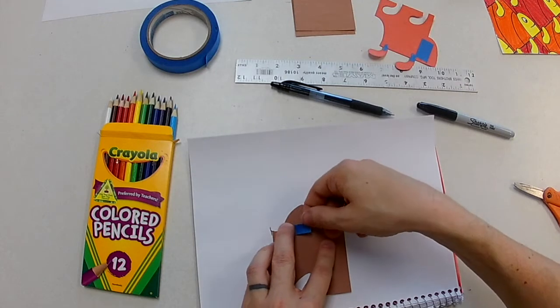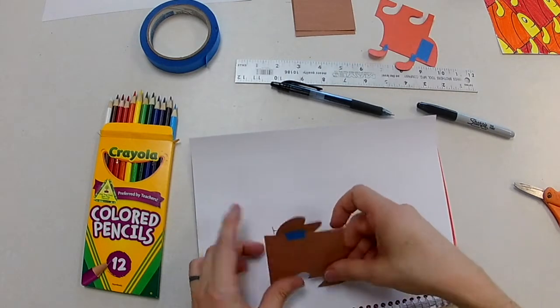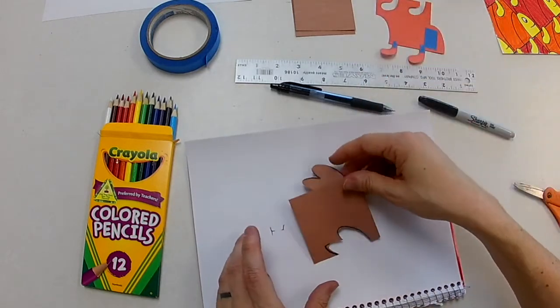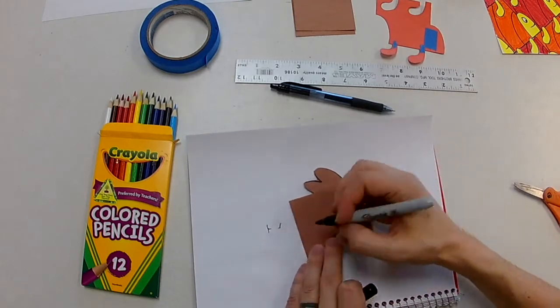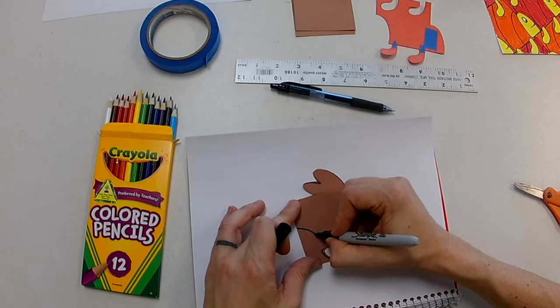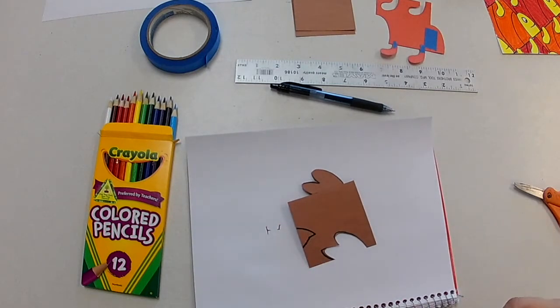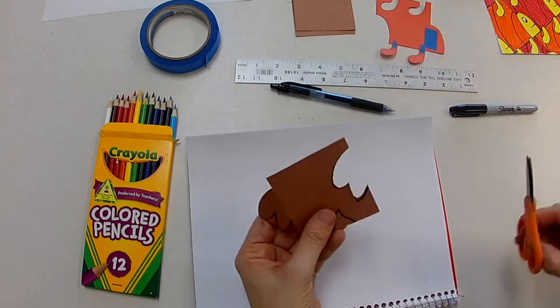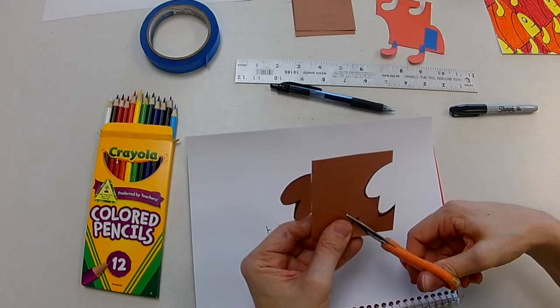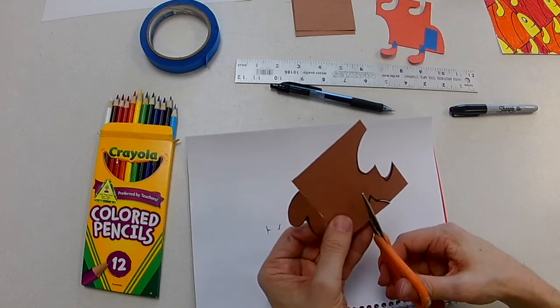All right, now I'm almost done. Now I'm going to want a beak. This is going to be kind of like an Angry Bird, so I'm going to make a beak like that and I'm going to cut it out. And go down.